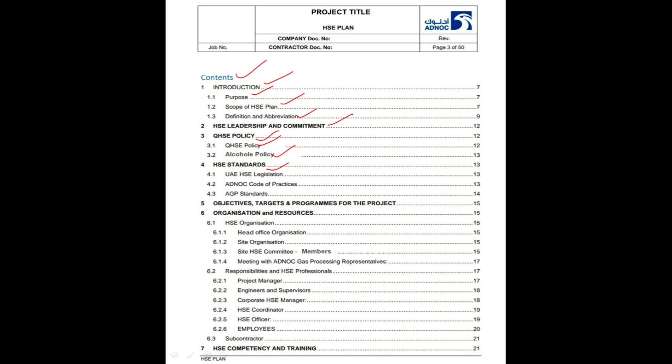Fourth one is HSC Standards. In this section some standards will be explained: UAE HSC legislations, ADNOC code of practices, and AGP standards will have detailed explanation in this HSC plan.